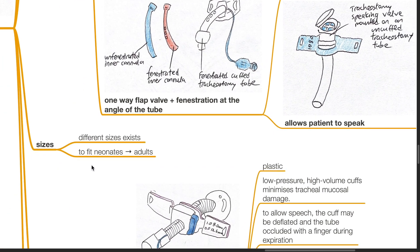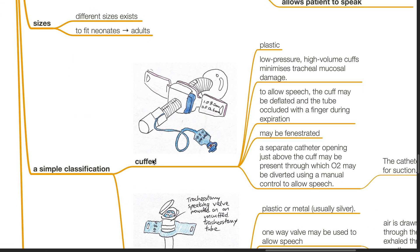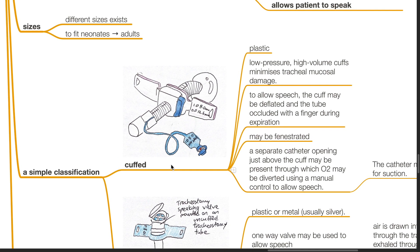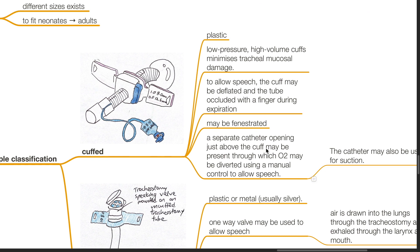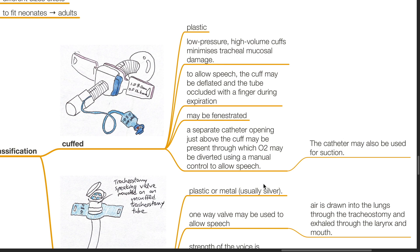Different sizes exist to fit neonates up to adults. A simple classification: cuffed and uncuffed. Cuffed tubes are plastic; low pressure, high volume cuffs minimize tracheal mucosal damage. The cuff may be deflated and the tube occluded with a finger during expiration to allow speech. Tubes may be fenestrated. A separate catheter opening just above the cuff may be present, through which oxygen may be diverted using a manual control to allow speech; the catheter may also be used for suction.